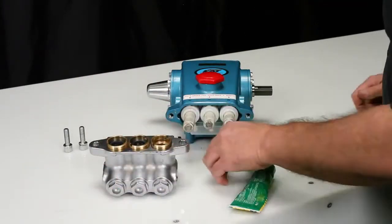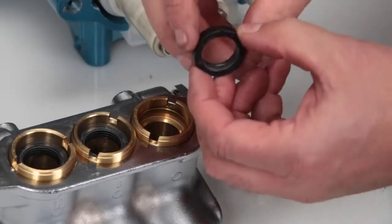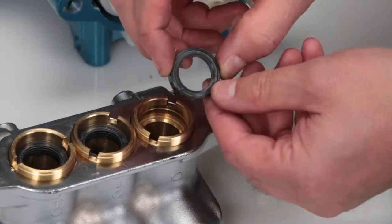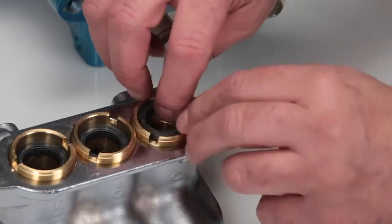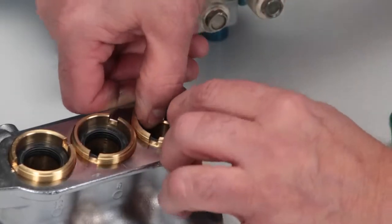Next, install the low pressure seal. The low pressure seal contains a spring on one side. Install with the spring side facing down and press into place.